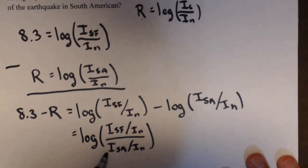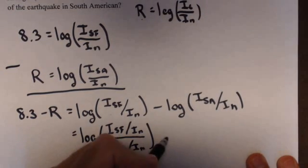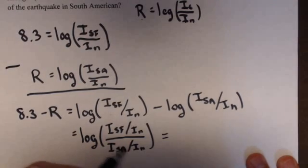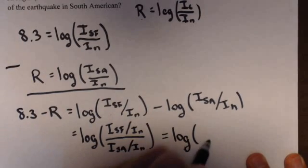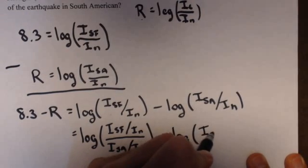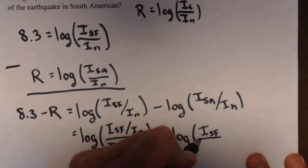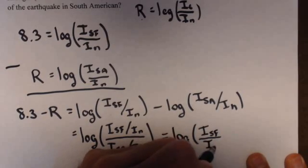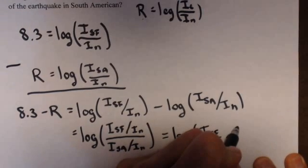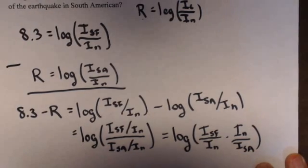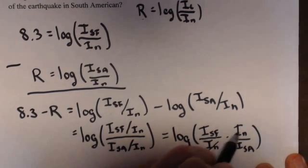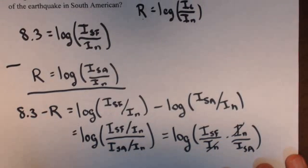Now, this may look a little weird at first, but realize what we can do. We're dividing by a fraction, which means we can flip it and multiply. So, inside this log, we have the intensity sub SF, so that's the intensity of San Francisco, over I_n times, I'm going to flip this denominator, I_n over I_SA. And here's what's brilliant about this. Those are actually going to cancel.